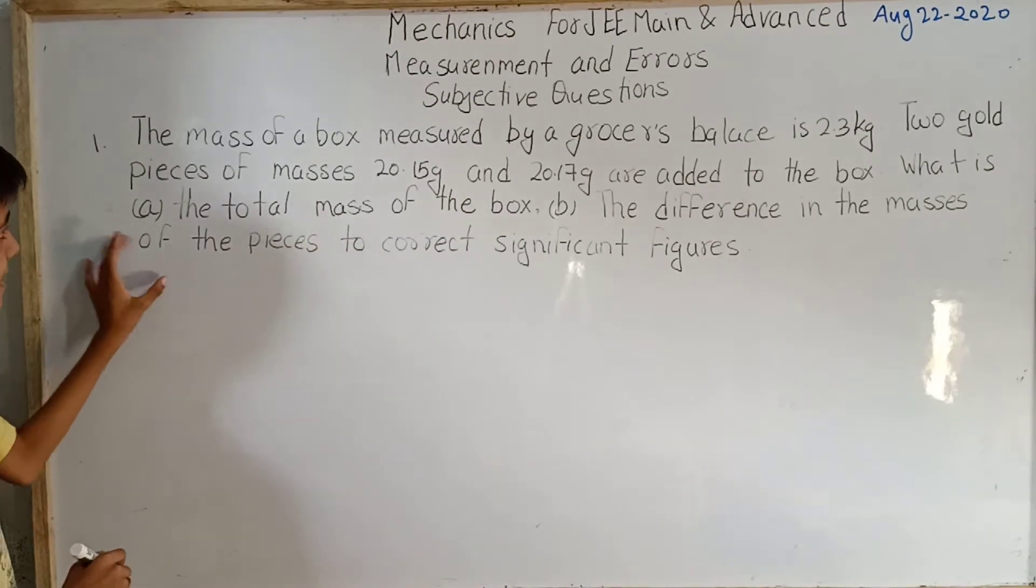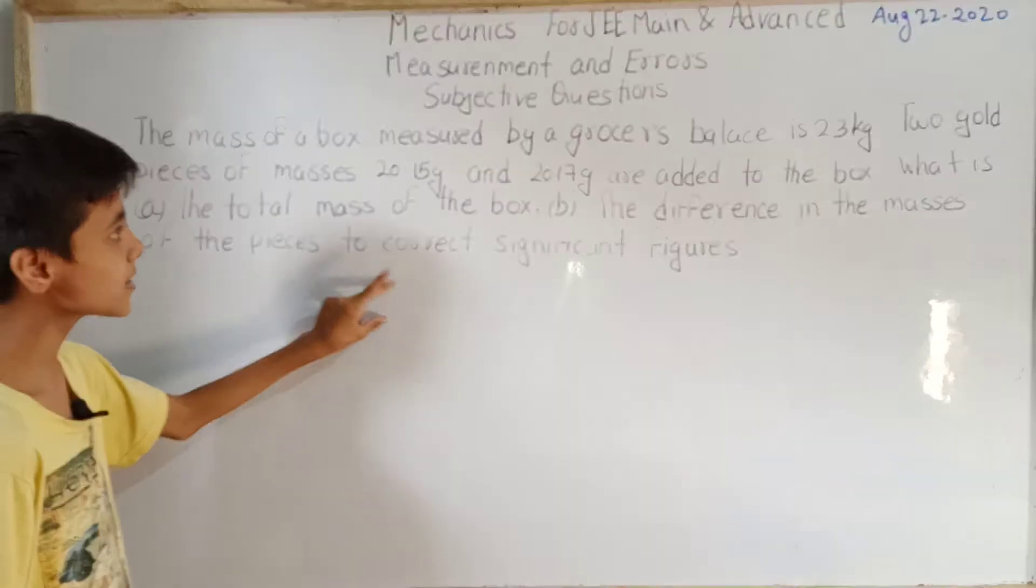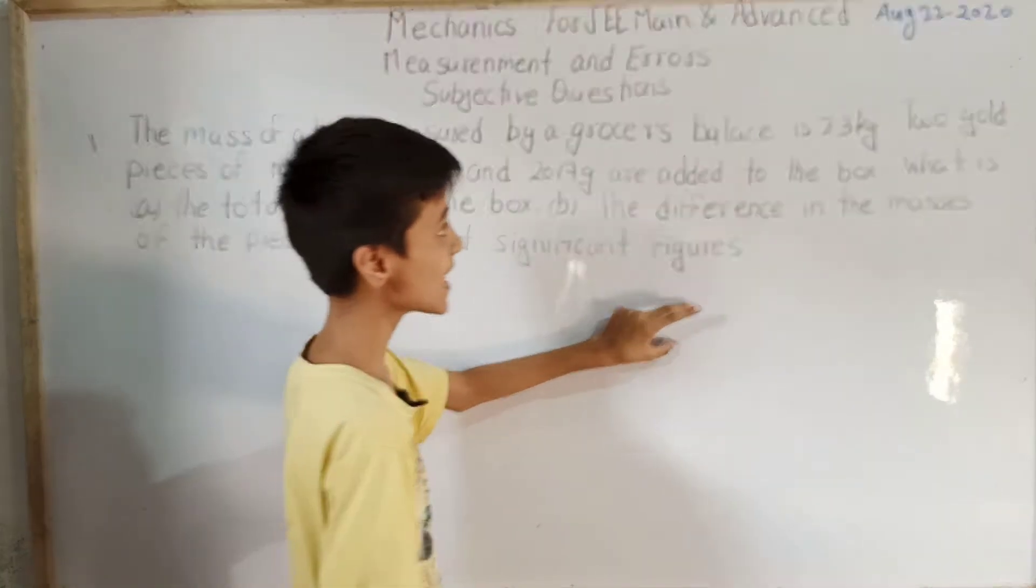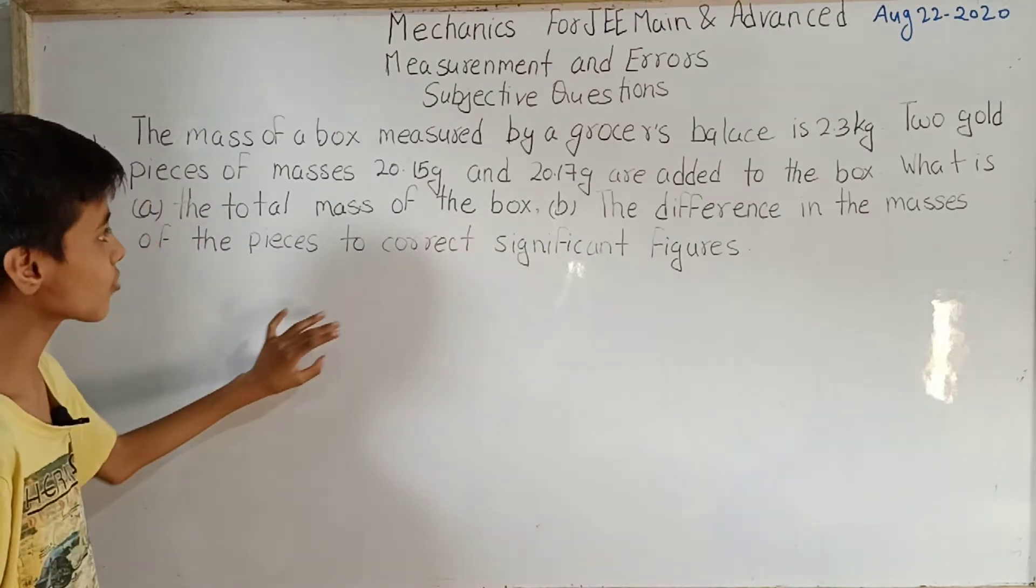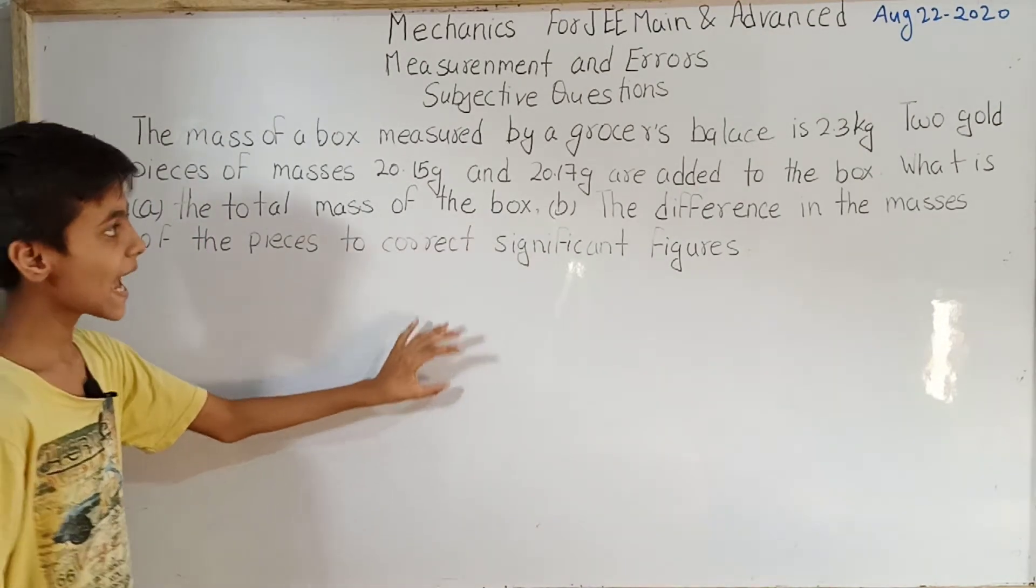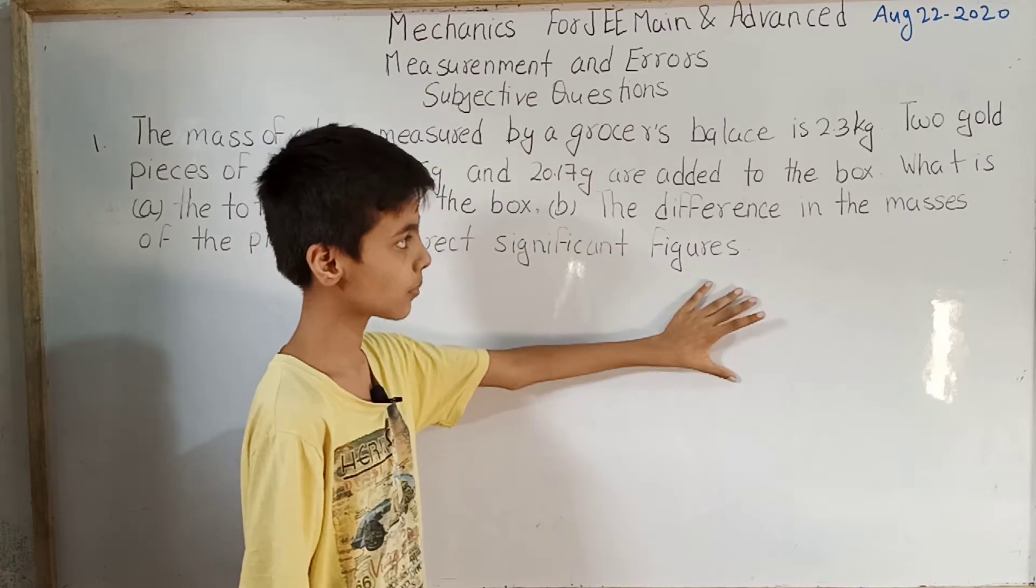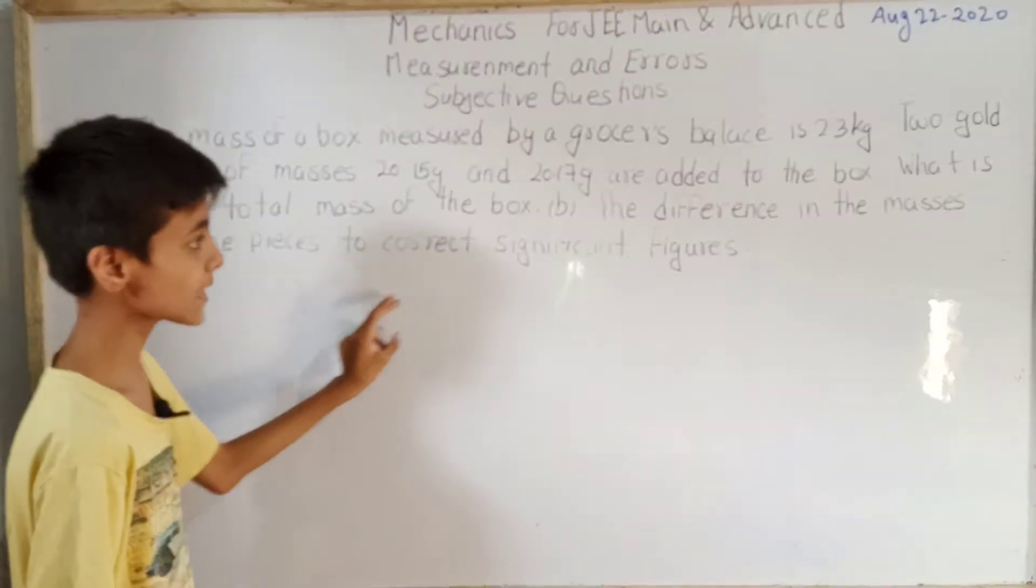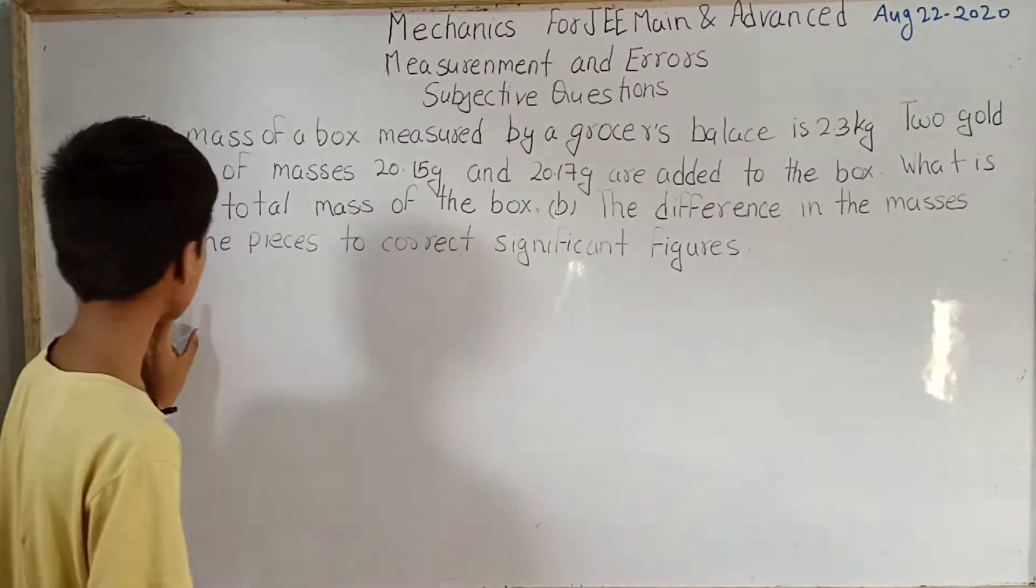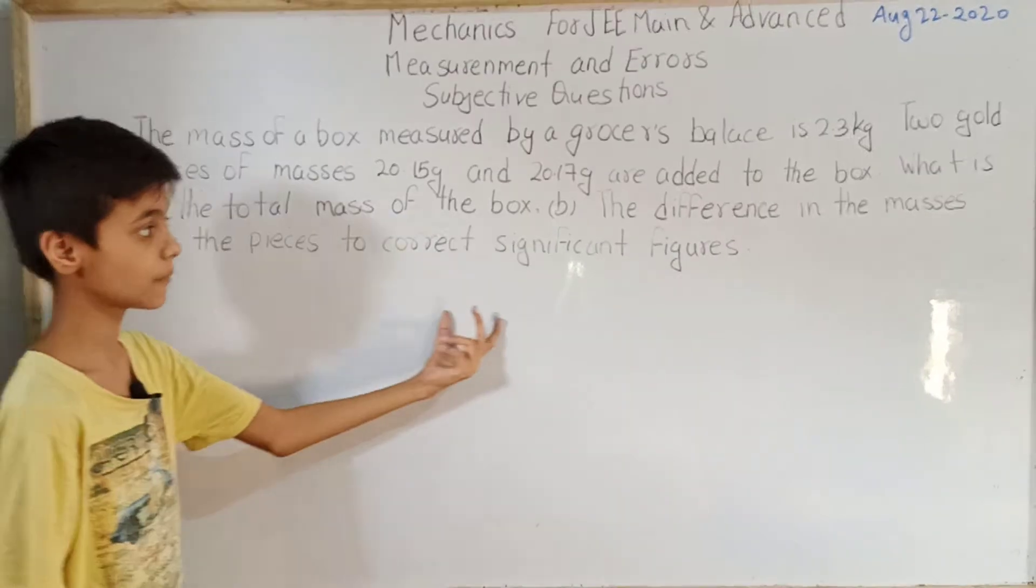The question is: The mass of a box measured by a grocer's balance is 2.3 kg. Two gold pieces of masses 20.15 grams and 20.17 grams are added to the box. What is (a) the total mass of the box and (b) the difference in the masses of the pieces to correct significant figures.